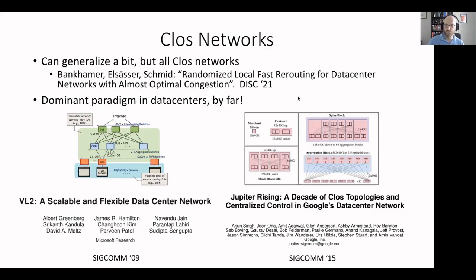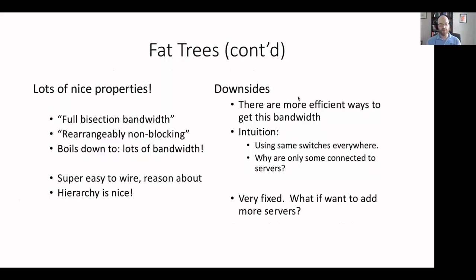Fat trees and Clos networks have some downsides — they're not the most efficient thing you can do, and they're very fixed. You get K-cubed over four servers — what if you want something in between? For different values of K that's a very fixed number. What do you do if you need something in between? How do you build a data center that you can expand later into a bigger one? These are all kinds of issues that happen when you use Clos networks.